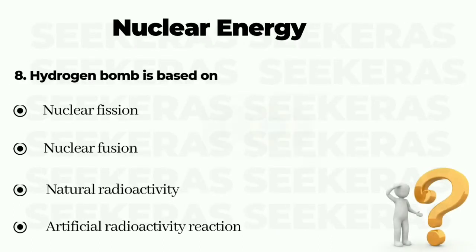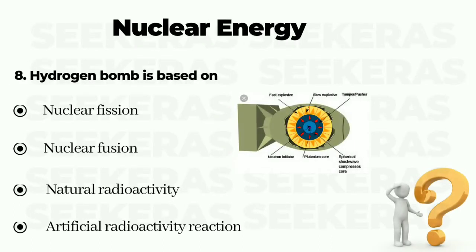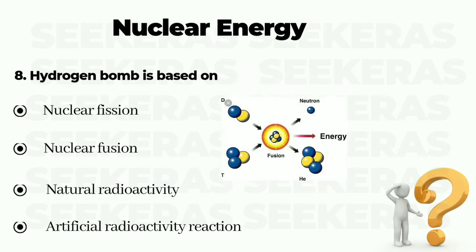Question number 8. Hydrogen bomb is based on: option A nuclear fission, option B nuclear fusion, option C natural radioactivity, and option D artificial radioactivity reactions. The correct answer is option B, nuclear fusion.